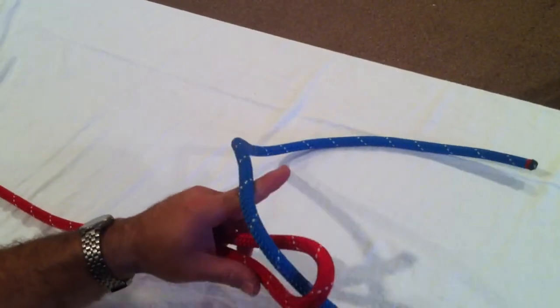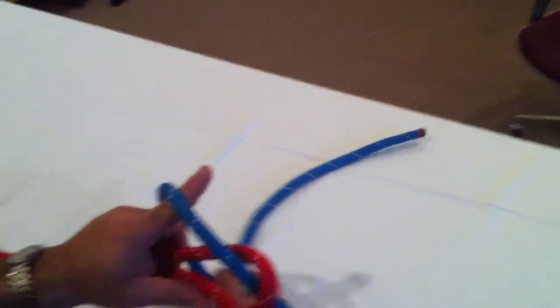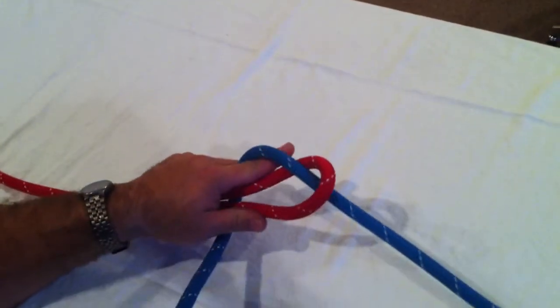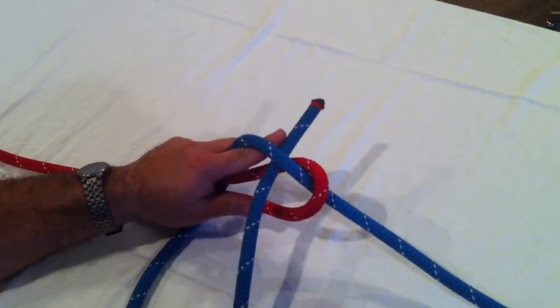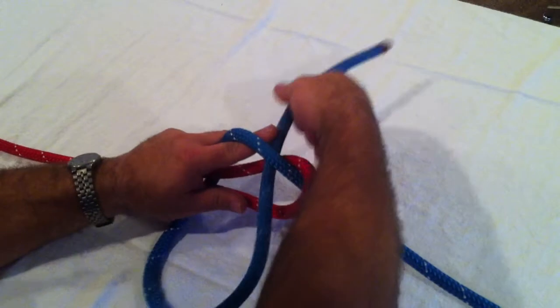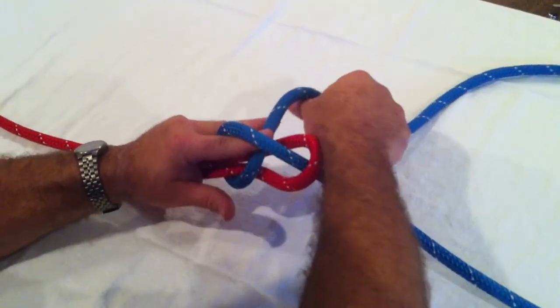Give yourself a little bit of tail here so you have some room to work with. Take and bring that rope around the back and the reason I put my finger there is that's going to guide the way as to where I want to put this. So I'm actually going to stick this rope right up there through there where my finger is and throw it around the back.